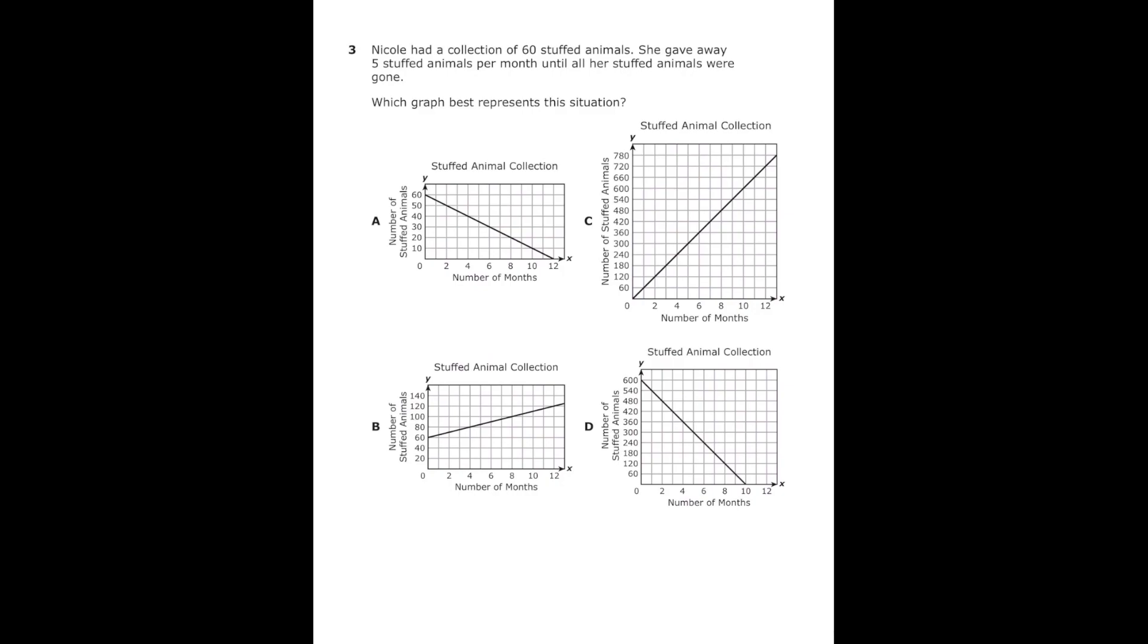This is number 3 from the 2022 7th grade math STAR test. Nicole had a collection of 60 stuffed animals. She gave away 5 stuffed animals per month until all were gone. Which graph best represents this situation? I know she started with 60 stuffed animals, so on my graph it should start at 60, and it should be decreasing from left to right.